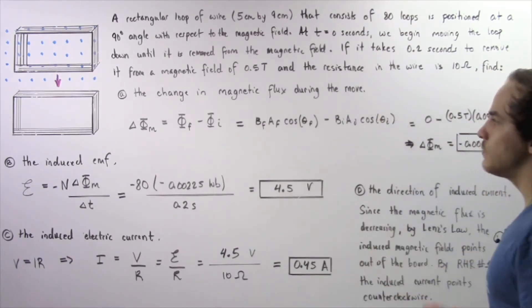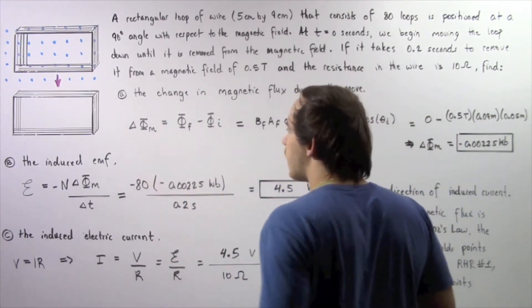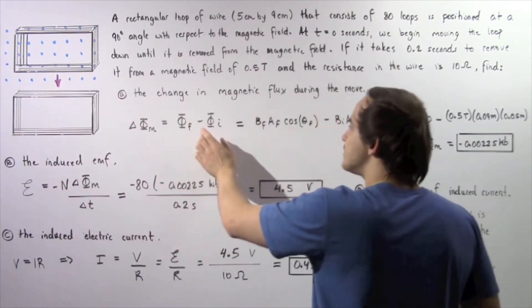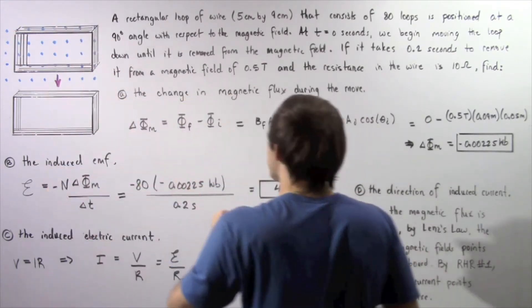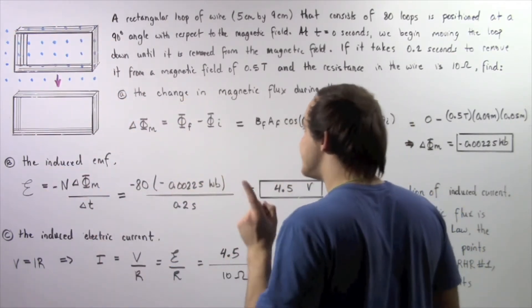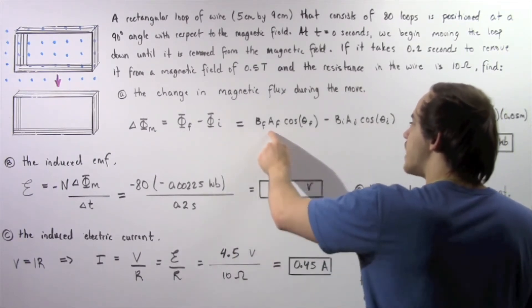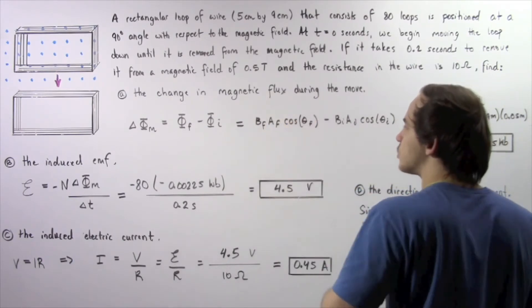So let's begin with part A. The change in our magnetic flux is equal to the final magnetic flux at this position minus the initial magnetic flux in this location. Now the magnetic flux is given by taking the product of the magnetic field B, the area A, and the cosine of the angle theta between these two vectors.